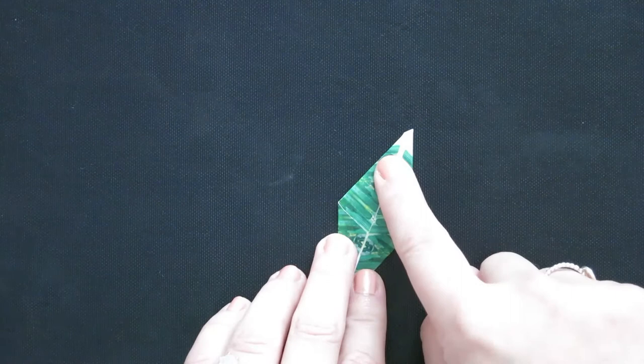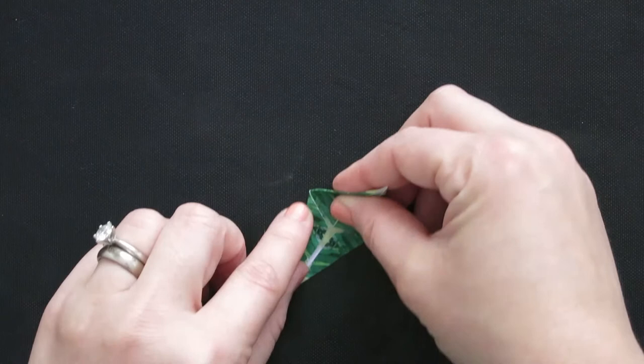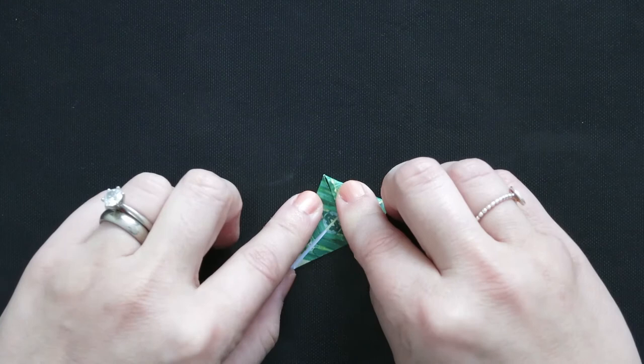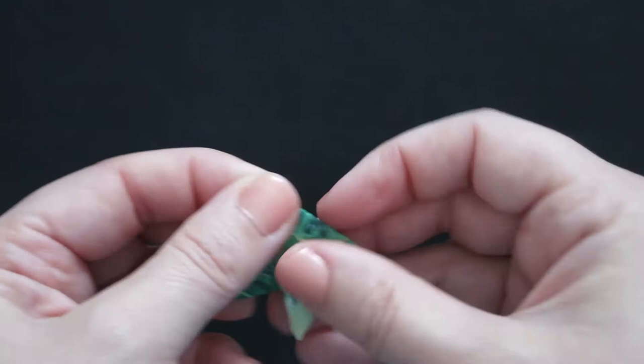I'm going to take the top edge here and fold it down, lining it up with that top edge of that triangle. So I'm going to fold it down, pivoting at that point, lining it up. I'll bring it right up to you so you can see—there's that triangle and there is the top edge lined up with it.